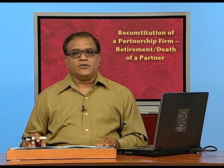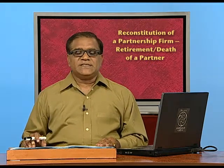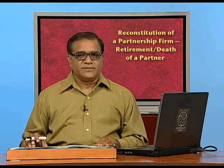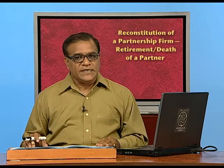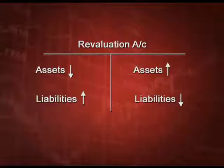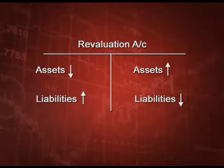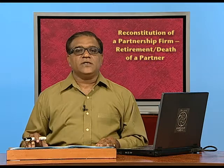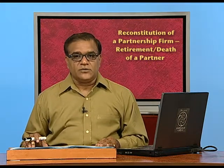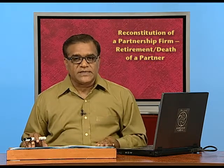How to calculate revaluation of assets and liabilities? The treatment is exactly the same as what we have done in admission. To recapitulate: debit side is when losses are there and credit side is when income is there. Losses arise when asset value decreases or liability value increases. Conversely, when asset value increases it is a gain, and when liability decreases it is a gain. We calculate the profit or loss and distribute to all partners existing at the time of revaluation — all the old partners — and in case of death, we also include the deceased partner.